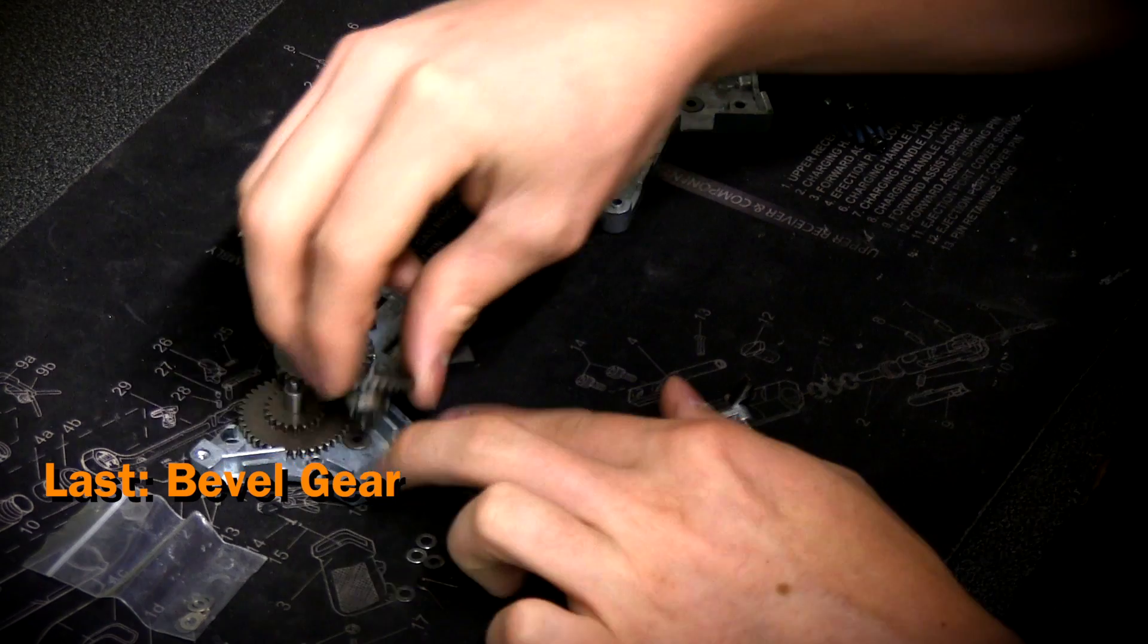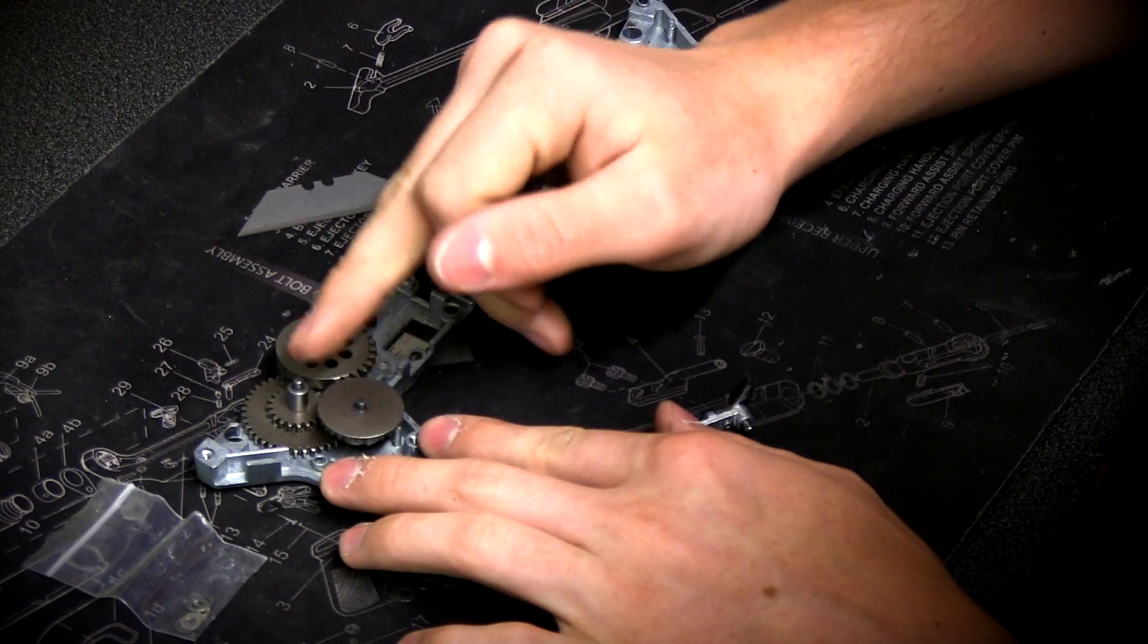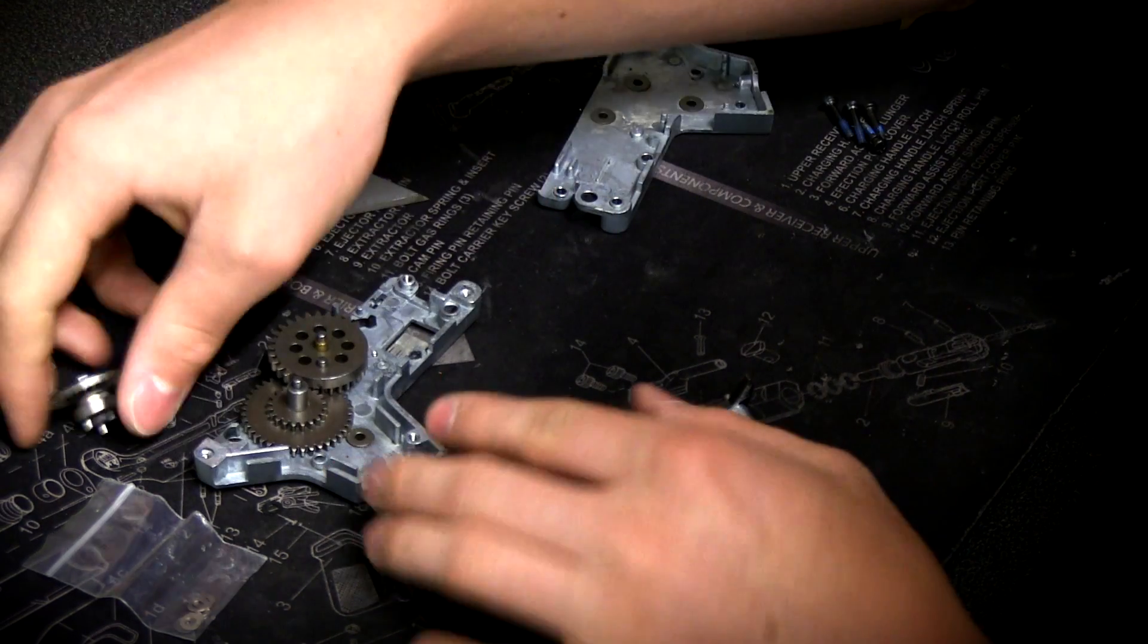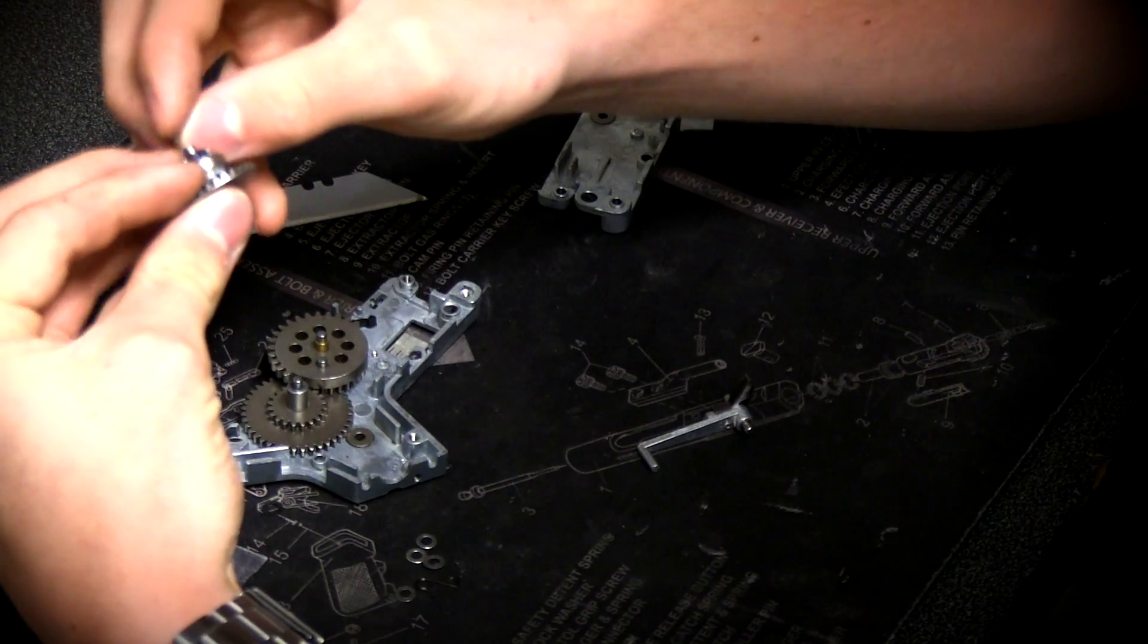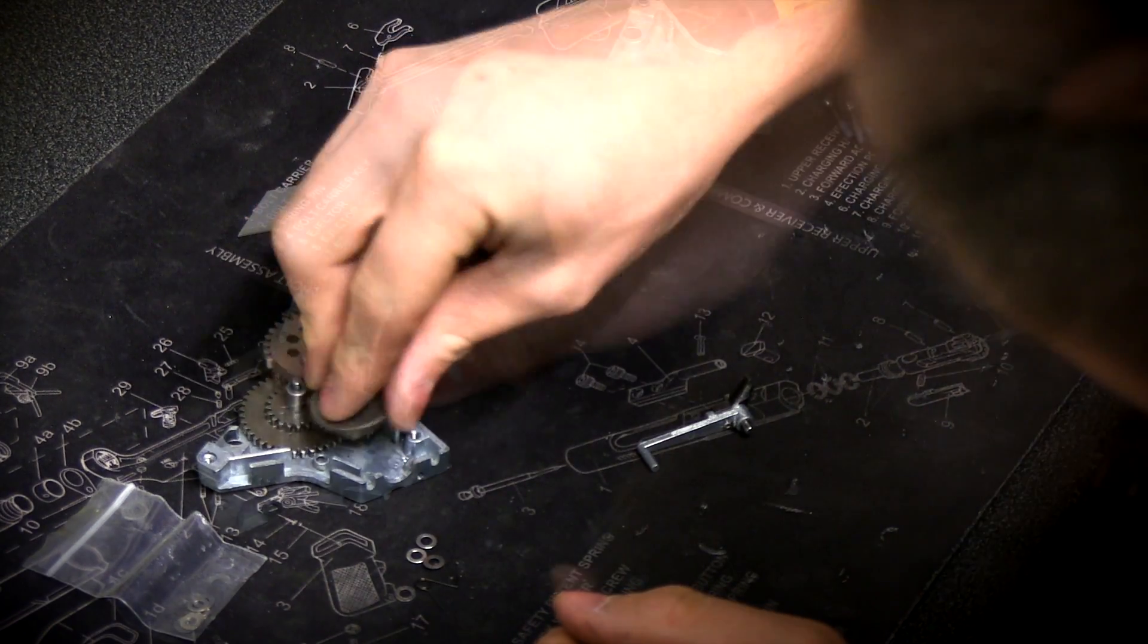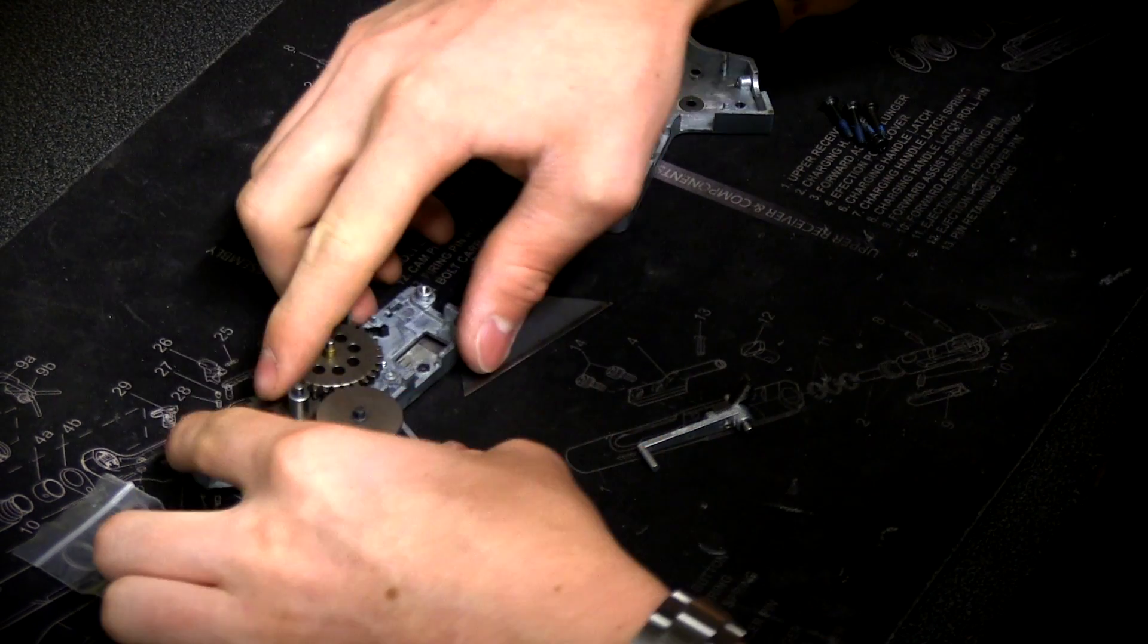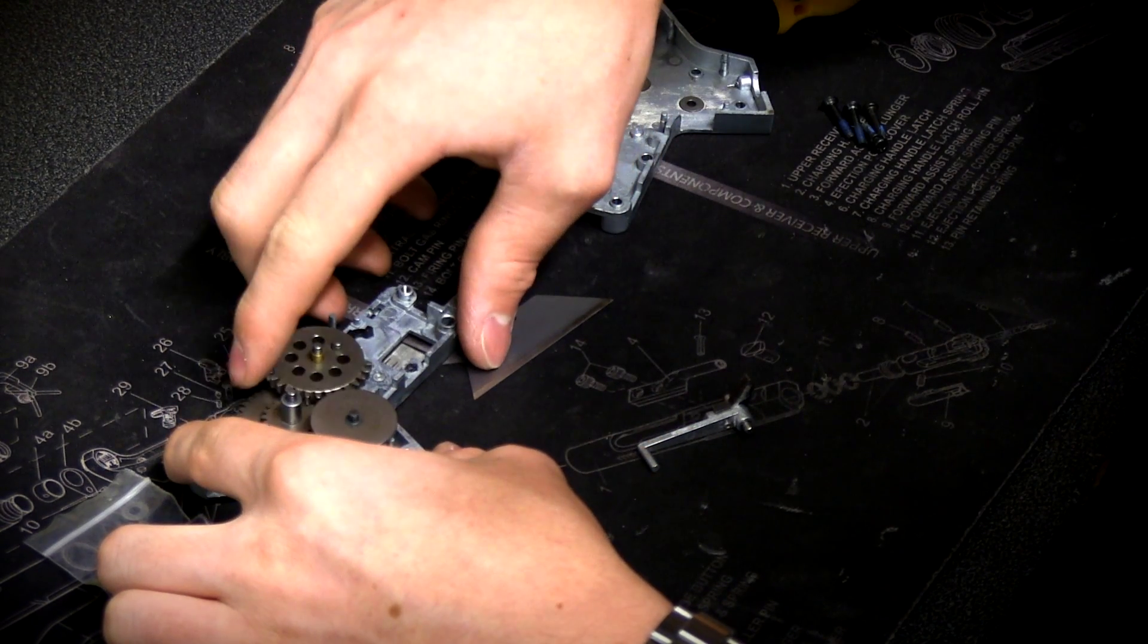Finally, the bevel. Again, same process. Make sure we're not rubbing on any faces. Looks like we're moving kind of slow there. So we'll go and throw 0.01 millimeter on there again. Give that a shot. Now you can see we're spinning a whole lot smoother.